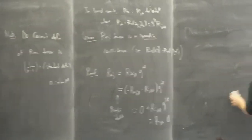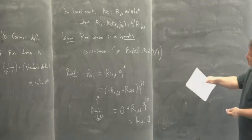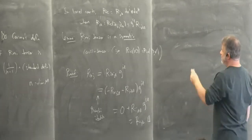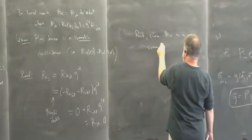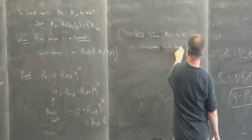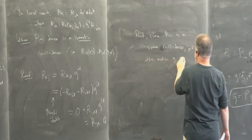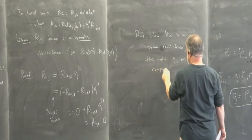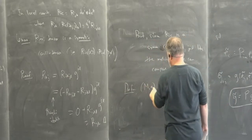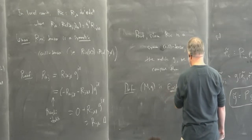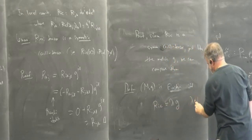Because Ricci is symmetric, it's almost exactly like the metric itself — the metric g is also a symmetric (0,2) tensor, but that one is additionally positive definite. There's no reason for this bilinear form to be positive definite. Since Ricci is a symmetric (0,2) tensor just like the metric, we can compare them; they live in the same space.